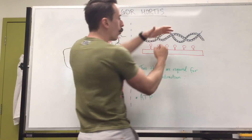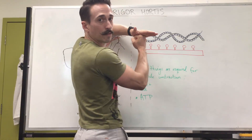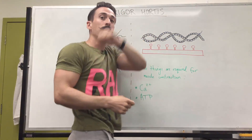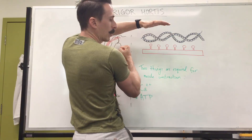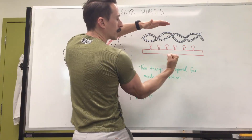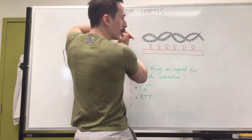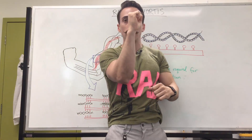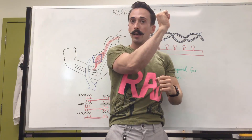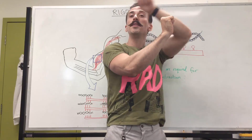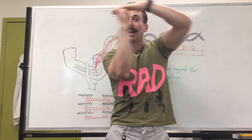Once the myosin head has pulled that actin filament in, you need another ATP molecule to pop the myosin head back off, cock it into position again, bind, and continue to pull. So ATP does the cocking of the head, the binding, and the pulling — but then you need another ATP molecule to pop it off and do the whole thing again.